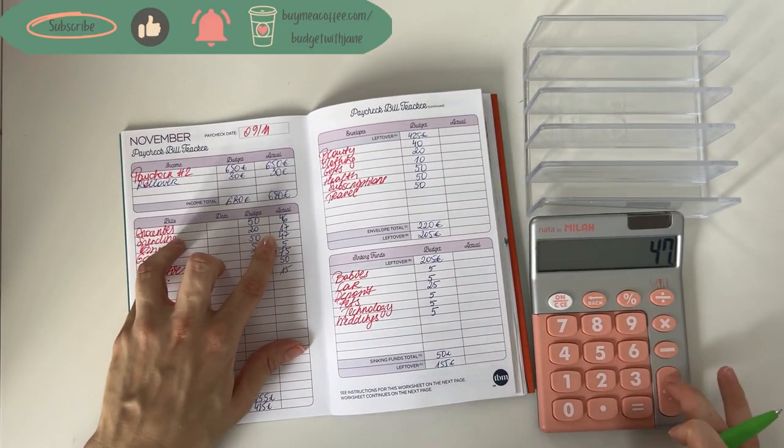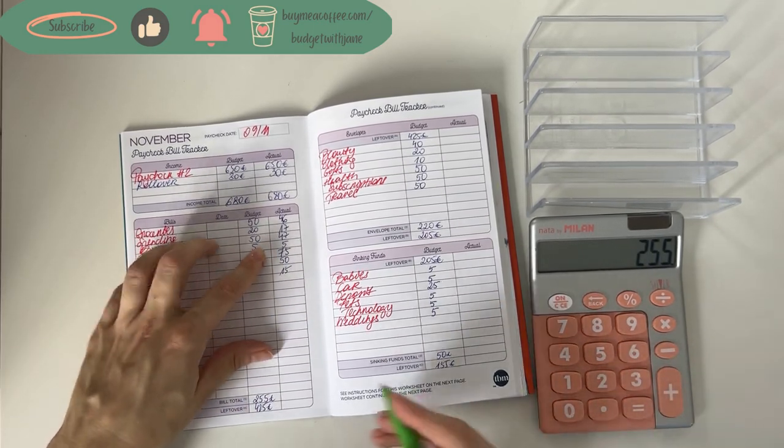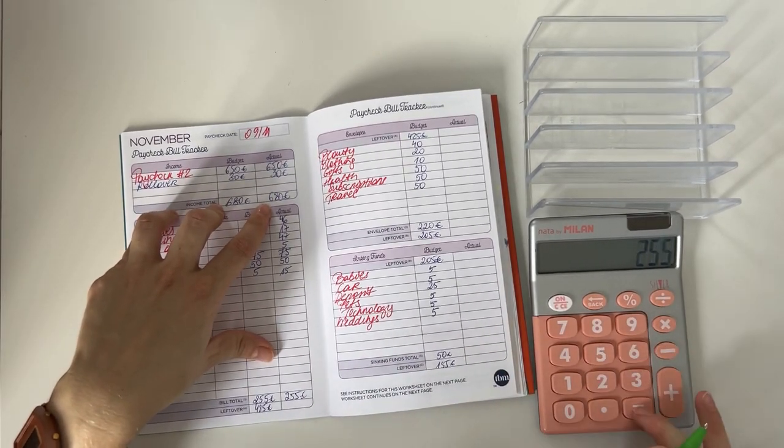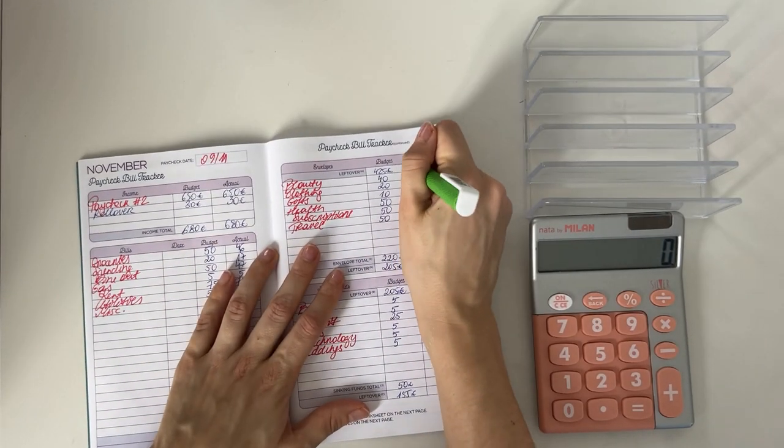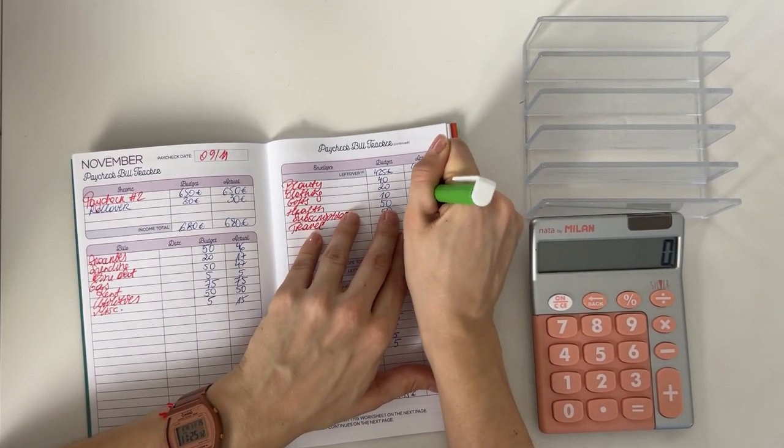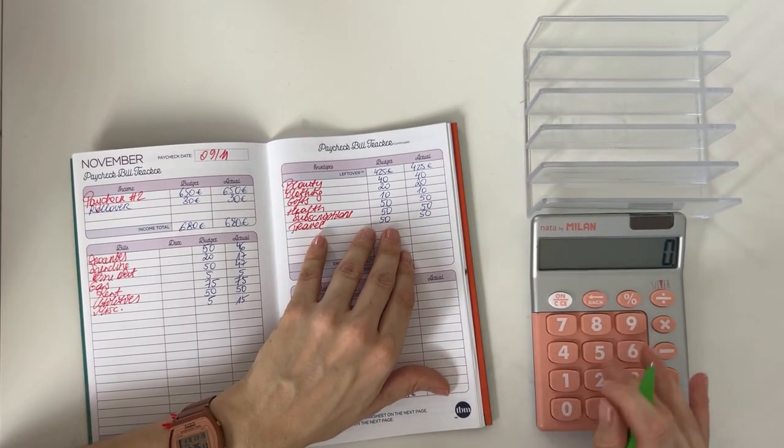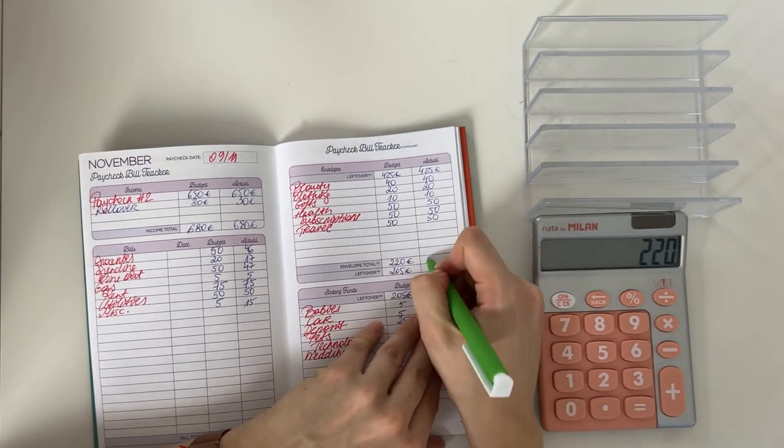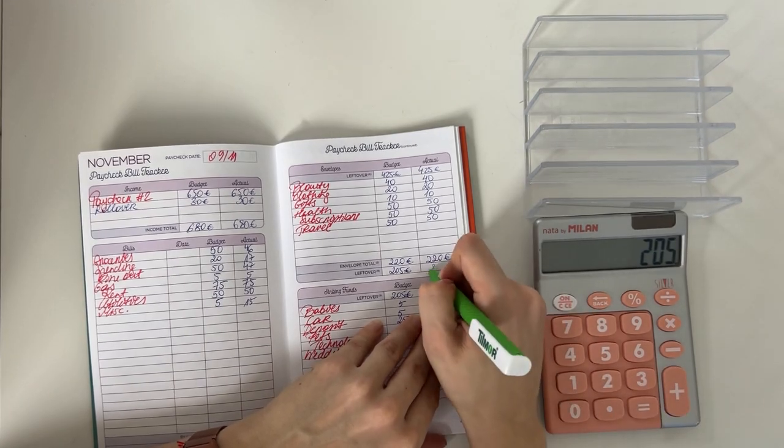So in total for bills and cash envelopes we put 255 euros. 680 minus 255 is 425 - we brought that here to short-term sinking funds. We put 40 in beauty, 20 in clothing, 10 in gifts, 15 health, 15 subscriptions, and 50 in travel. So in total that was 220. 425 minus 220 is 205.